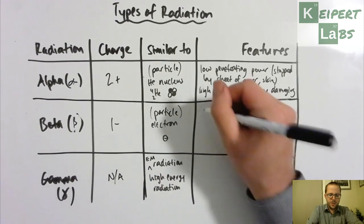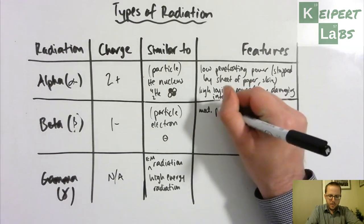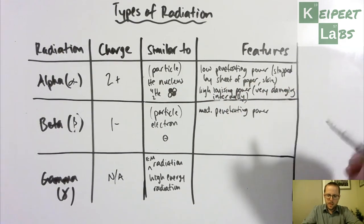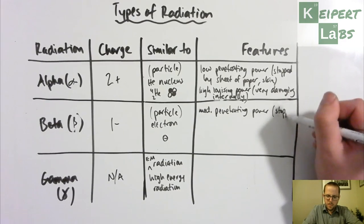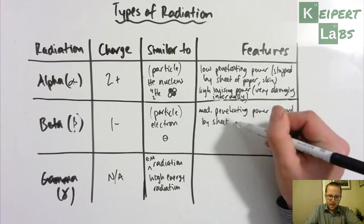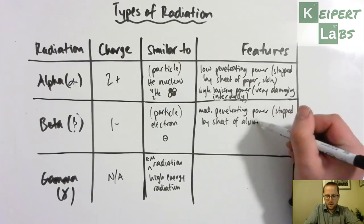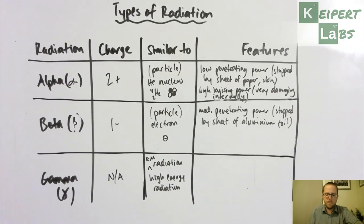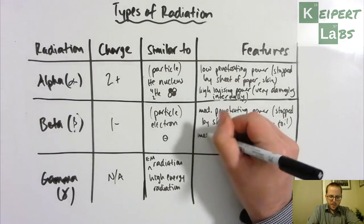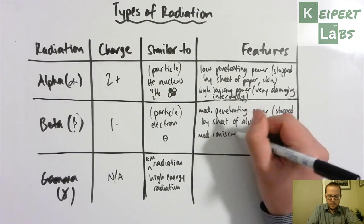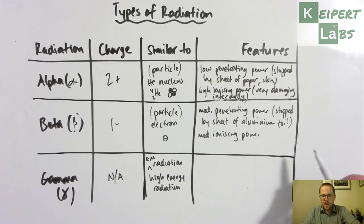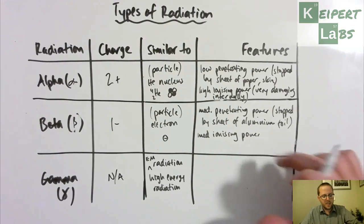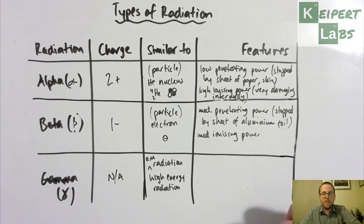And then we get to beta, which has got a medium penetrating power. So stopped by a sheet of aluminium foil. So you don't need very thick protection from beta radiation. And it's got a medium ionizing power. So it's not quite as ionizing as our alpha radiation, but it would still be very damaging internally if used indiscriminately. But we can use substances that give off beta radiation to treat damaged tissue or to treat cancer tissue. But we have to be careful about where we put them so that it doesn't just damage willingly.